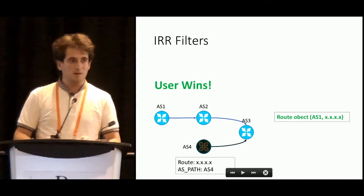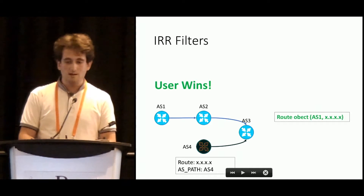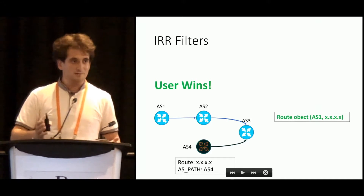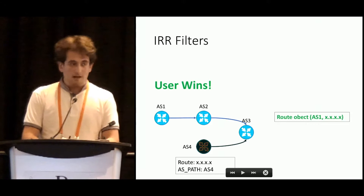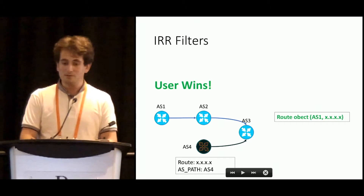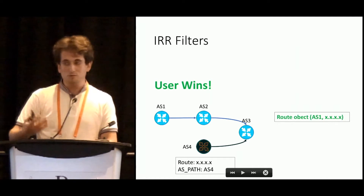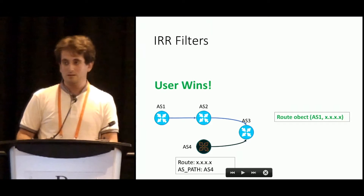In this very simple topology: here is Autonomous System 1, which takes IP transit from Autonomous System 2. Autonomous System 2 and 4 both take transit from Autonomous System 3. Autonomous System 4 will try its best to hijack address space that belongs to Autonomous System 1. In a simple situation, when there is a route object that belongs to AS1, and AS4 tries to advertise that prefix, AS3 will be able to detect it because there will be no match with IRR filters applied between AS4 and AS3.